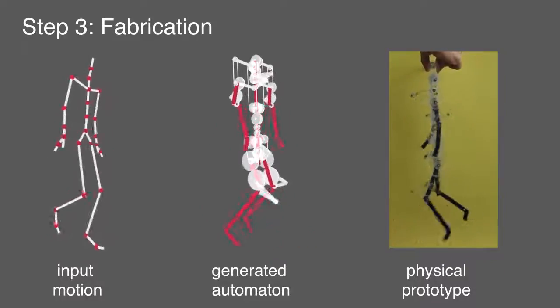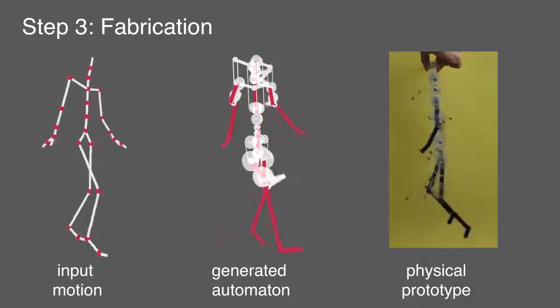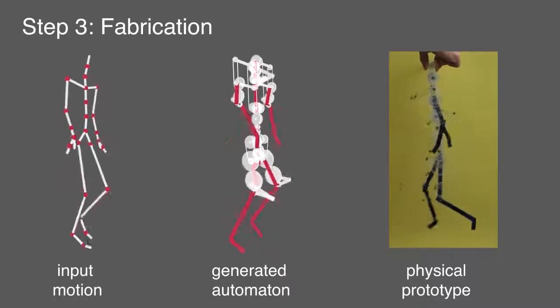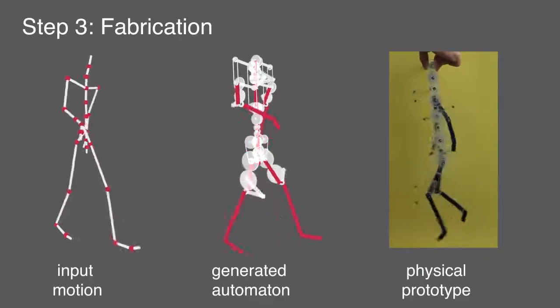The resulting automaton can easily be fabricated. The planar mechanical parts such as gears and linkages are laser cut. We use off the shelf pieces for the remaining pulleys, shafts and pins. Our designs can be driven by a single input motor as shown here.